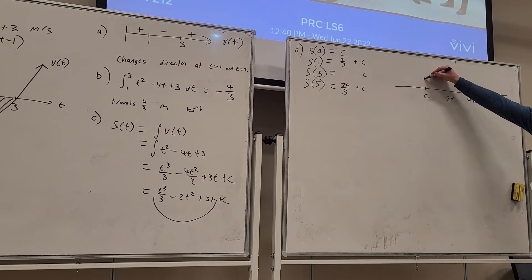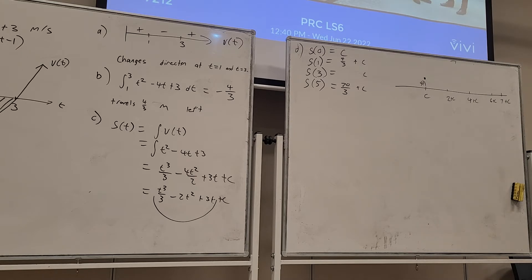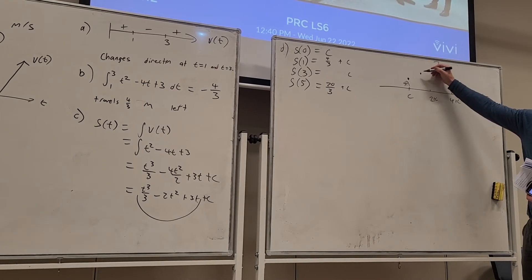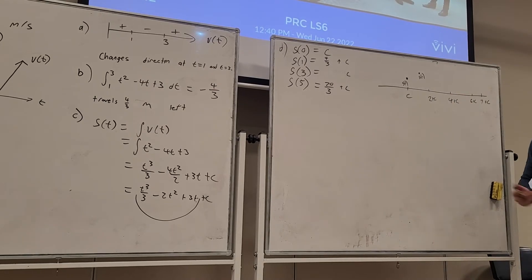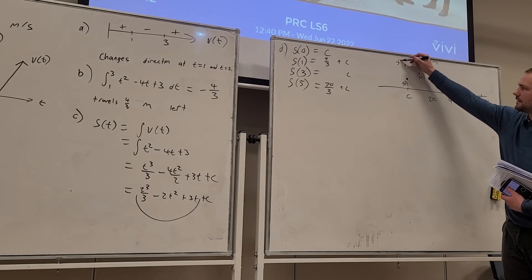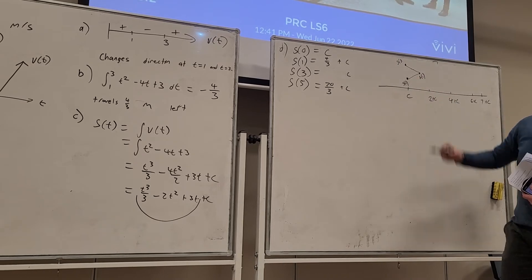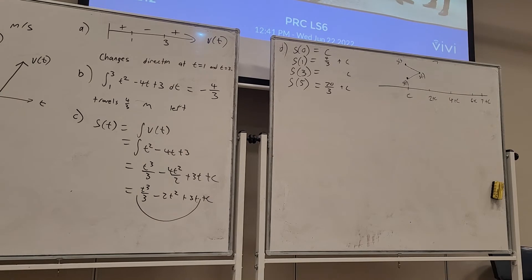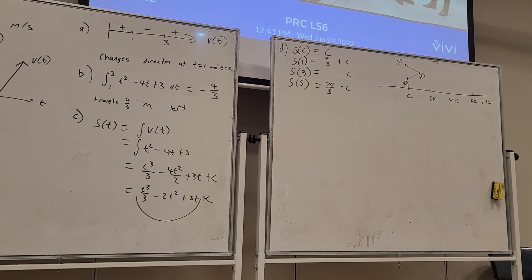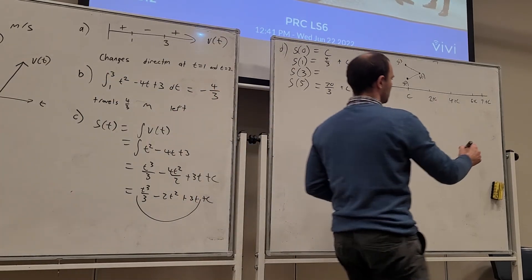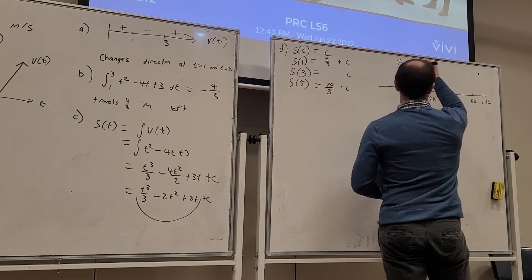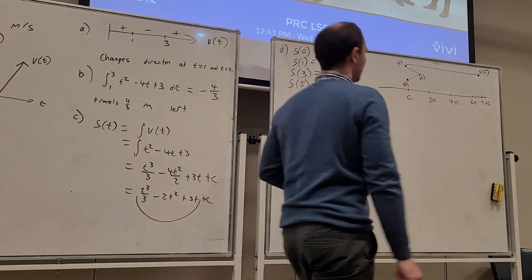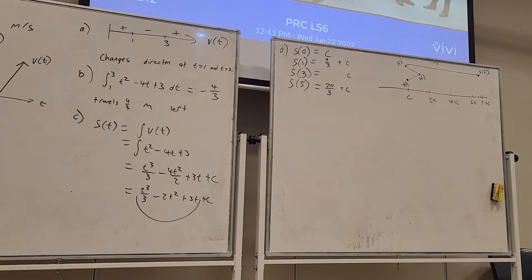So let's draw the motion diagram. It starts here. This is S(0). It moves to the right until it gets to 4/3 units. So 4/3 is about 1.3, so that's going to be about here. That's S(1), and then it moves to the left until it gets back to C. That's going to be S(3). So we've got moving to the right, moving to the left. Let's look at our velocity diagram to confirm that. We have moving to the right, moving to the left, and now we're moving back to the right again. We're moving back to the right until we get to 6.6, which is about here. S(5). So there's our motion diagram.